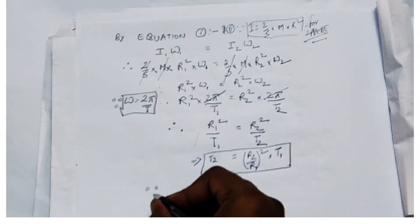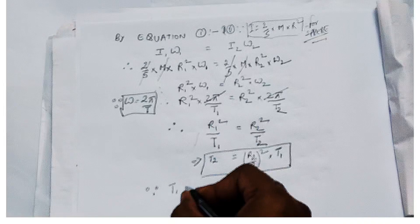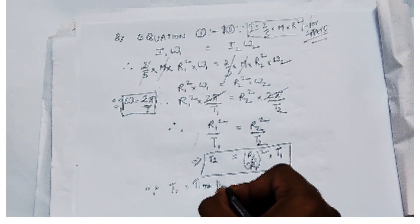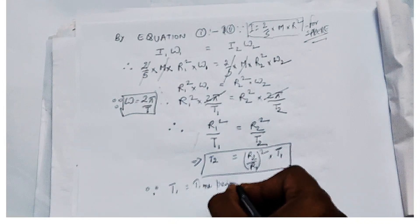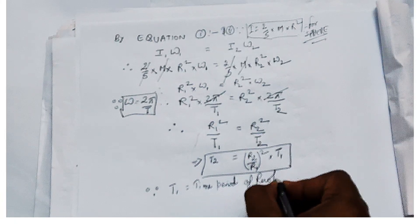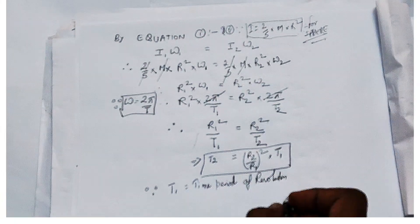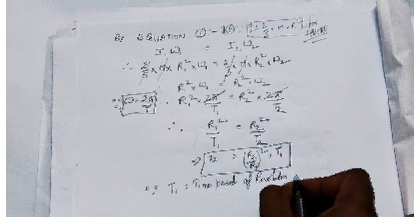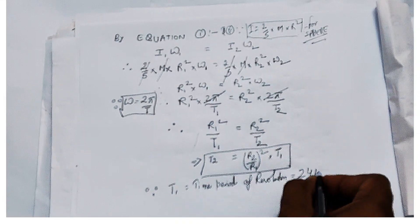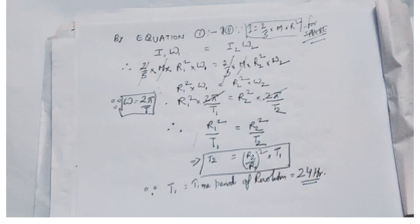T2 = (R2/R1)² × T1. T1 is the duration of one full day before contraction, which is 24 hours. So we put the value of T1 as 24 hours into this relation to get the expression for T2.